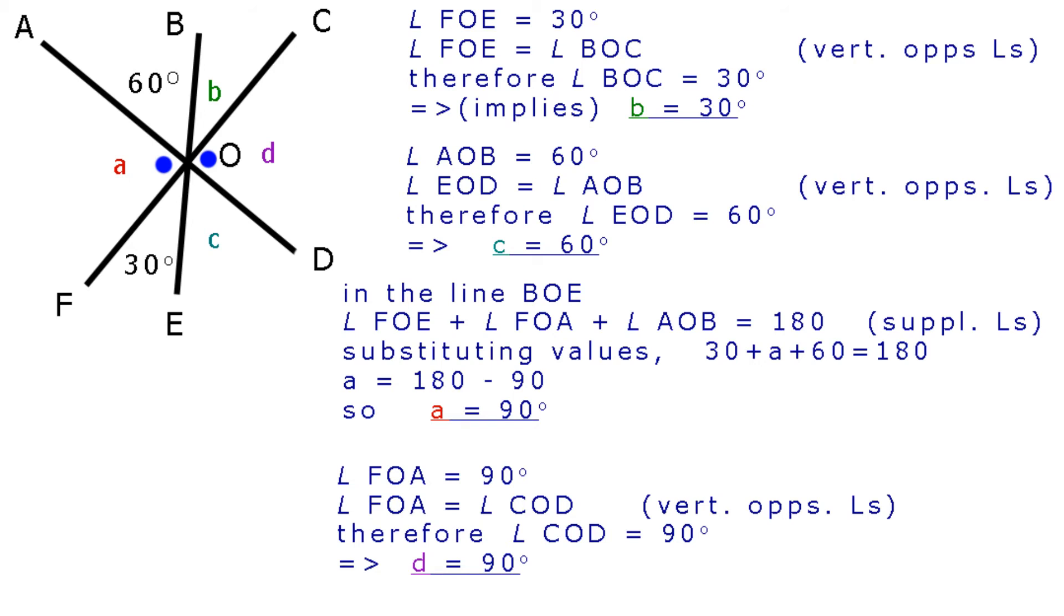Time now to look at parallel lines and the angles made when we lay a straight line across them. Before we start, let's take a closer look at these parallel lines. To show that they are indeed parallel we signify this by putting arrows on them. The arrows, one on each line, point in the same direction and are slightly staggered. If we now layer our straight line, called a transversal, across the two parallel lines, eight angles are generated.